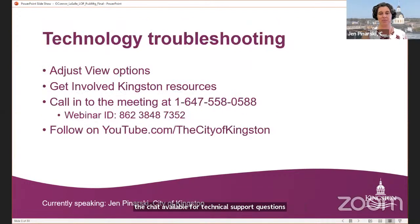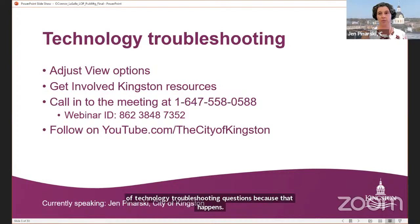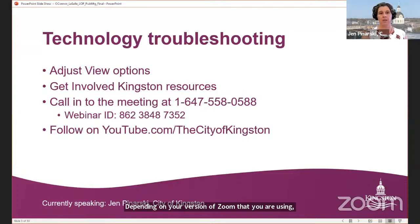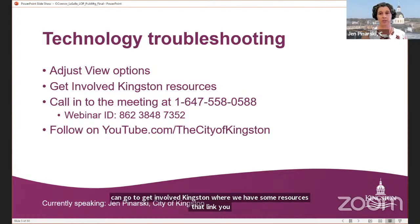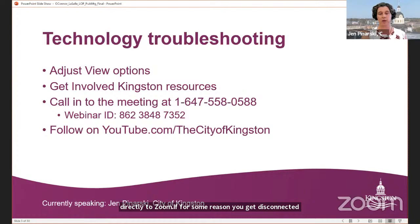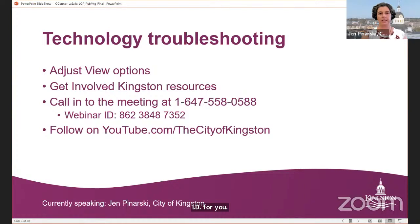I'm going to go over a couple of technology troubleshooting items. Depending on your version of Zoom you can adjust the view options to see the presentation, everyone who's speaking, or a combination of both. You can go to Get Involved Kingston where we have resources that link you directly to Zoom. If you get disconnected you can call in by phone: 647-558-0588, webinar ID 862-3848-7352. You can also follow along on YouTube at youtube.com slash the City of Kingston.